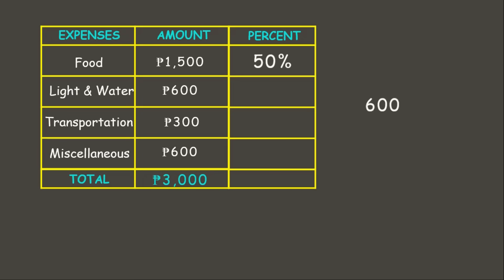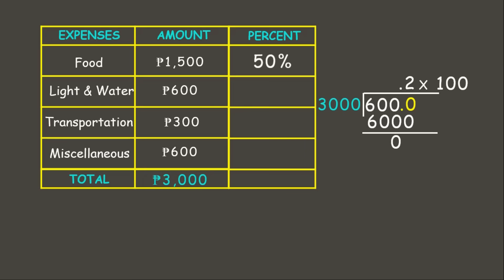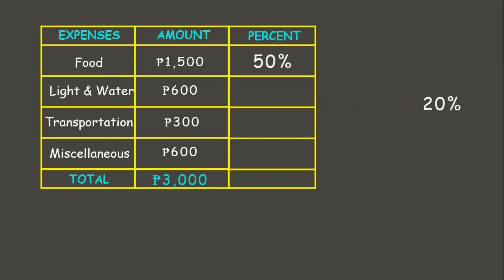Next, let's have light and water: 600 pesos divided by the total amount of 3,000 pesos. Since 600 is smaller than 3,000, we get 6,000 ÷ 3,000 = 0.2. Multiplying 0.2 by 100 gives us 20 percent. That is the percent for light and water.